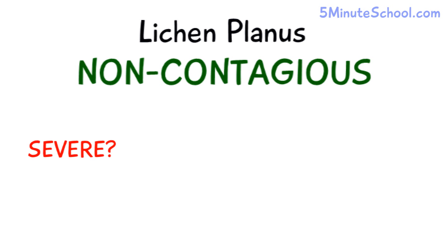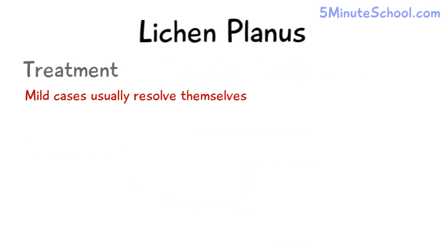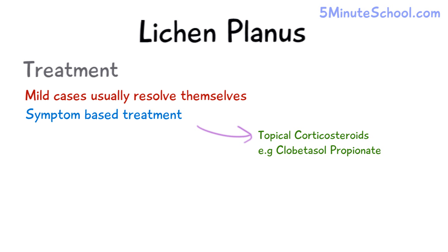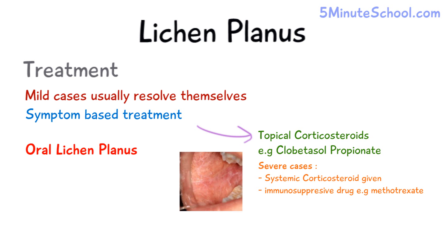It's important to remember that lichen planus is a non-contagious disease, but it can be quite severe in its appearance, causing hyperpigmentation and the formation of bullae. Usually lichen planus resolves on its own, and the aim of treatment is to resolve the symptoms, which involves the application of topical corticosteroids — for example, clobetasol propionate. In more severe cases, corticosteroids are given orally alongside immunosuppressive drugs like methotrexate and mycophenolate mofetil.